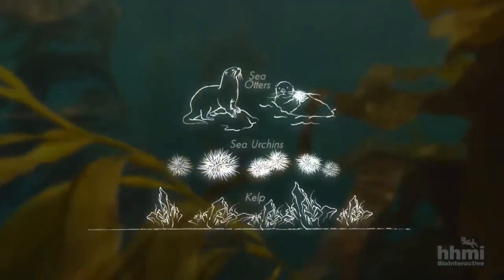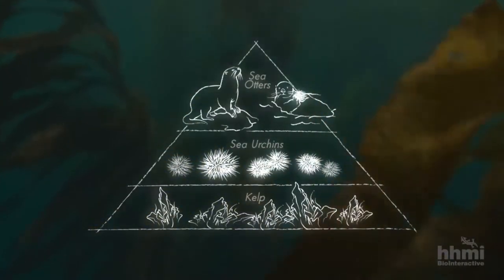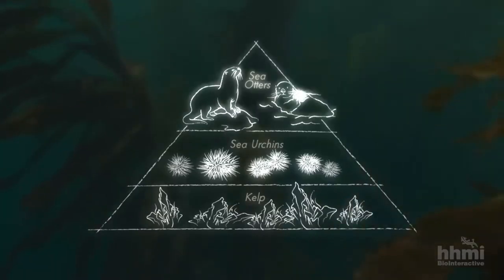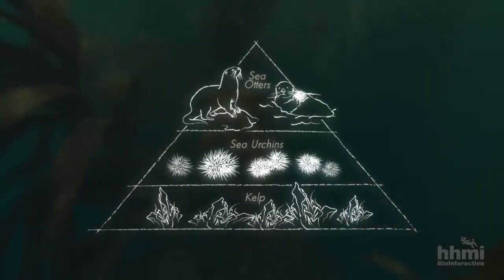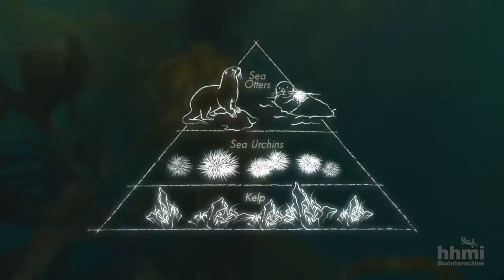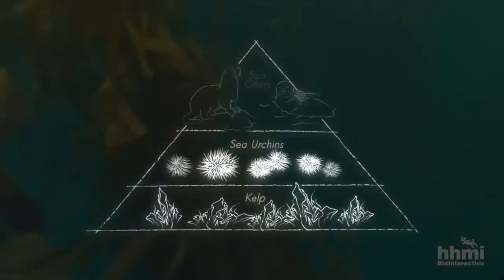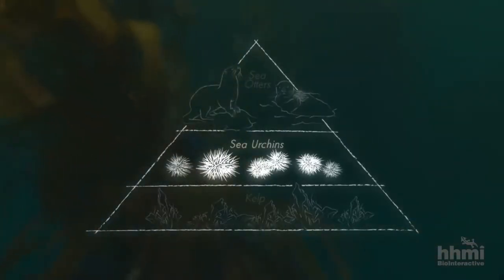It was a striking demonstration of the green world hypothesis. Sea otters — the predators — were controlling the urchins that fed on the kelp. Remove the sea otters and the kelp forests disappear.